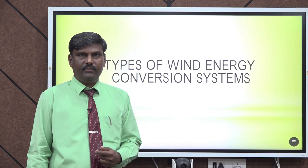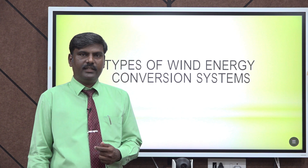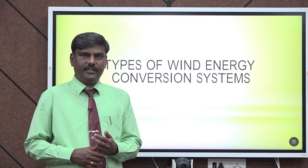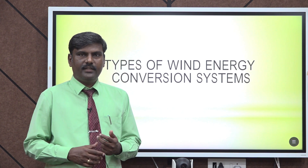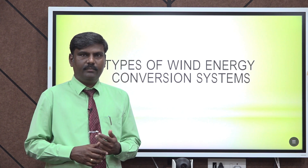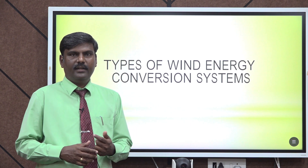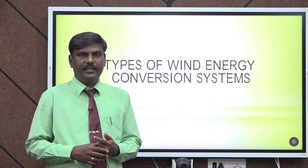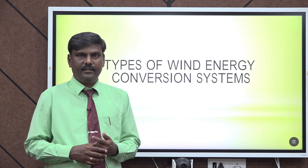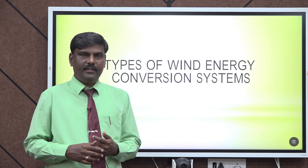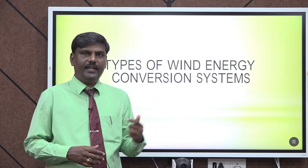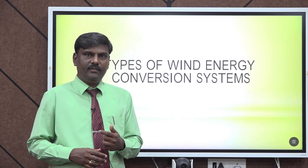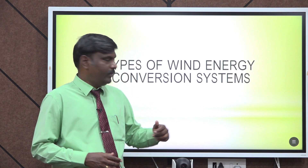Three types of generators are there: one is a squirrel cage induction generator, second one is a permanent magnet synchronous generator, and third one is a doubly fed induction generator. We can see three types of wind energy conversion systems one by one.